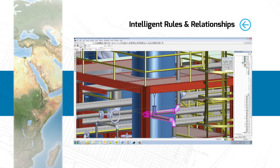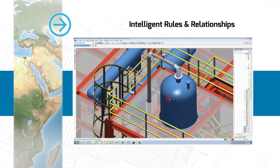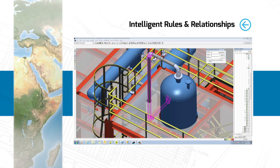Stay on top of change — rules fire automatically when changes are made to the design. This is much more than just automation of tasks; it's honoring design intent and behavior for 3D plant objects. Rules automate repetitive tasks, saving you time and money.